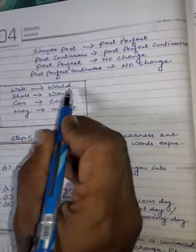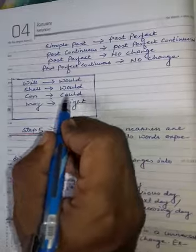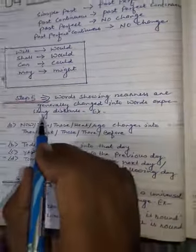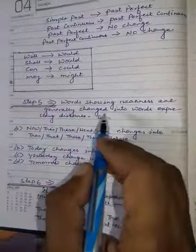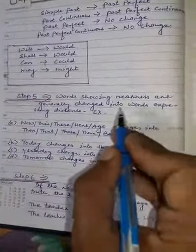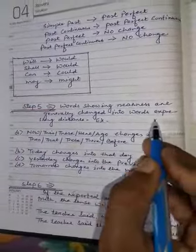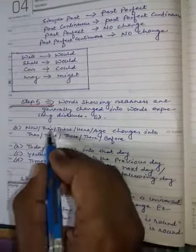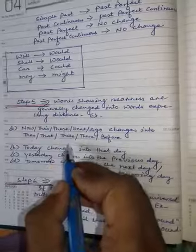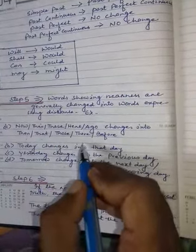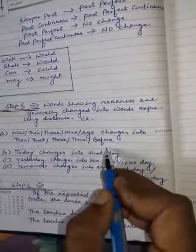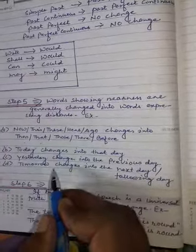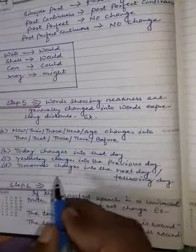For modals: 'will' becomes 'would,' 'shall' becomes 'would,' 'can' becomes 'could,' and 'may' becomes 'might.' Step 5: Words showing nearness are generally changed into words expressing distance. 'Now' becomes 'then,' 'this' becomes 'that,' 'these' becomes 'those,' 'here' becomes 'there,' 'ago' becomes 'before,' 'today' becomes 'that day,' 'yesterday' becomes 'previous day,' 'tomorrow' becomes 'next day' or 'following day.'